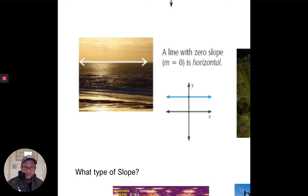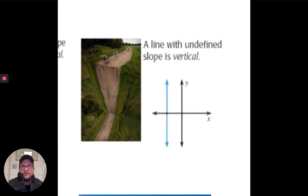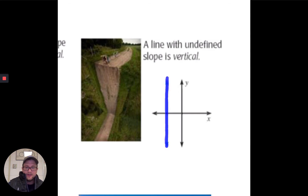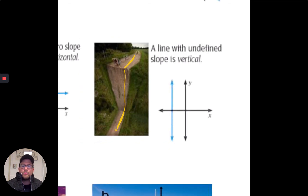When you see a line with zero slope, it has no rise from left to right — you stay at the same height the whole time. Last is a line with undefined slope, which always goes straight up and down. There is no left to right. Think of a sheer cliff — that straight up and down piece is what we call undefined slope.